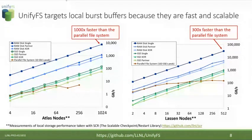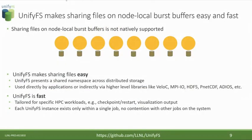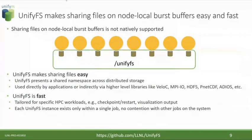Because node-local storage is fast, we want to make using it easy for shared-file applications. What we do is create a named mount point across the burst buffers in your job — in this example slash UnifyFS — and then you can use that just like any other file system mount point to do I/O. You can use it directly from your application using POSIX I/O, or indirectly through high-level I/O libraries like HDF5 or checkpointing libraries like SCR or Veloci.